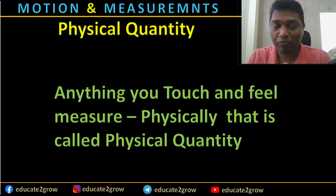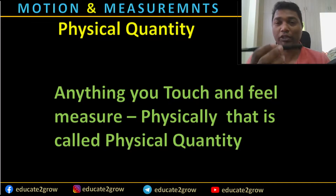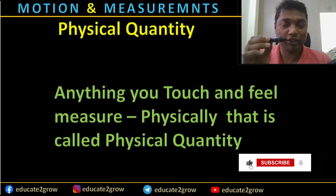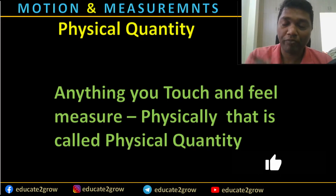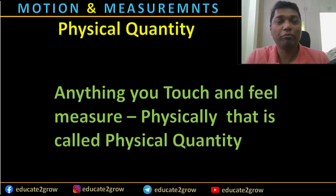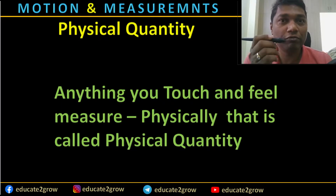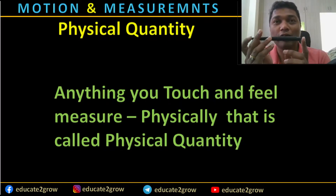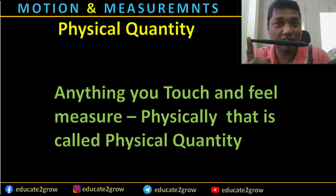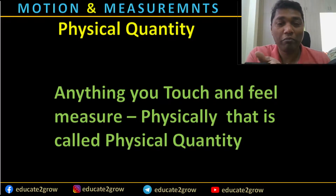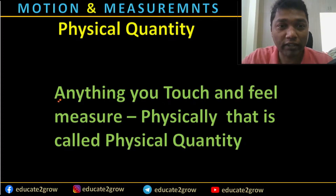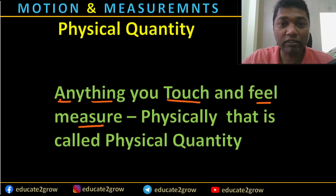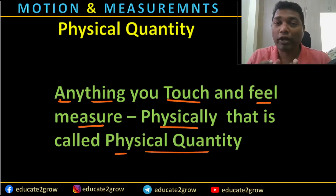Let me explain physical quantity. Anything you touch and feel physically — for example, I'm touching a pen. I'm going to measure this pen with respect to length, and also with respect to weight. So you are handling the object by touching and feeling it — that's why it is called a physical quantity. Length is a quantity we measure by touching; mass is measured by weighing the pen. Anything you can touch, feel, and measure physically is called a physical quantity.